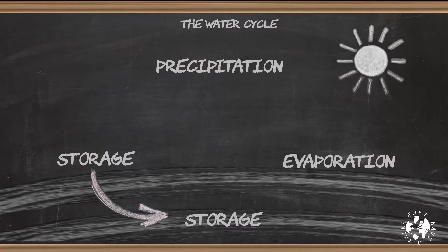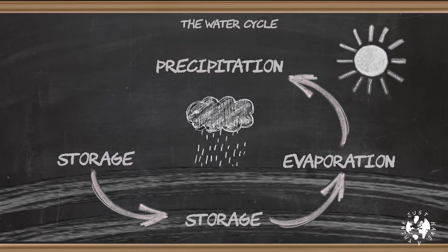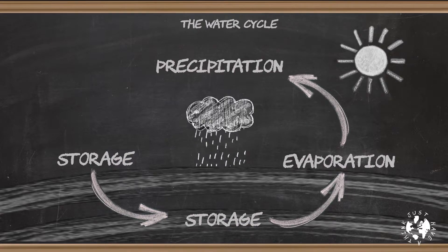The heat of the sun causes surface water to evaporate from these stores, and also from plants as they transpire, and even from humans and animals as we breathe and perspire. Most of the evaporation on earth takes place, not surprisingly, over the vast oceans. Water that's evaporated up from the surface is held in the atmosphere as clouds. Incidentally, atmospheric water vapour is by far the most significant greenhouse gas.